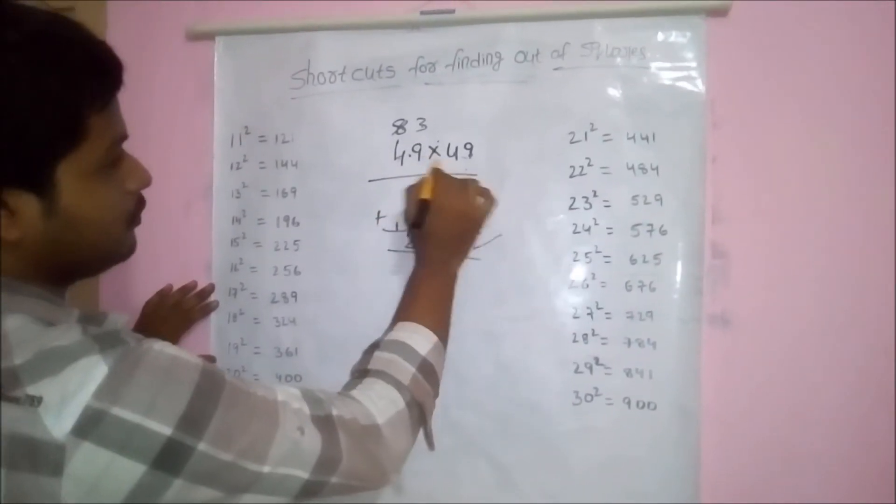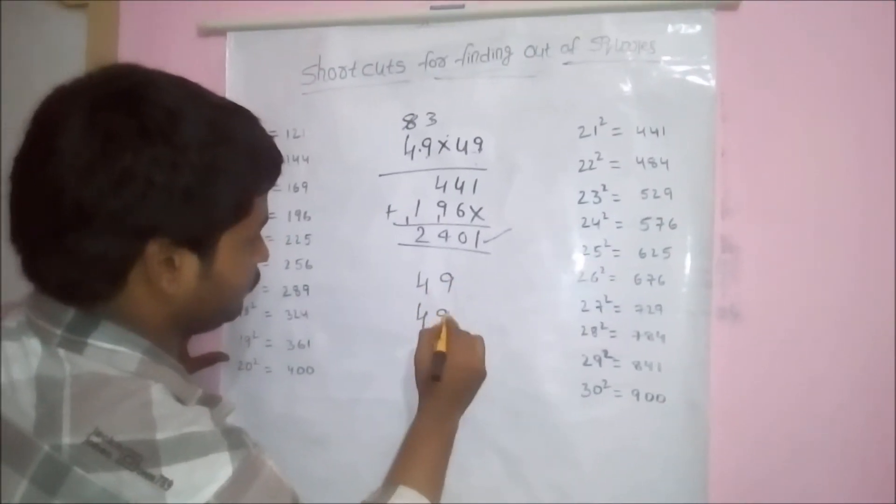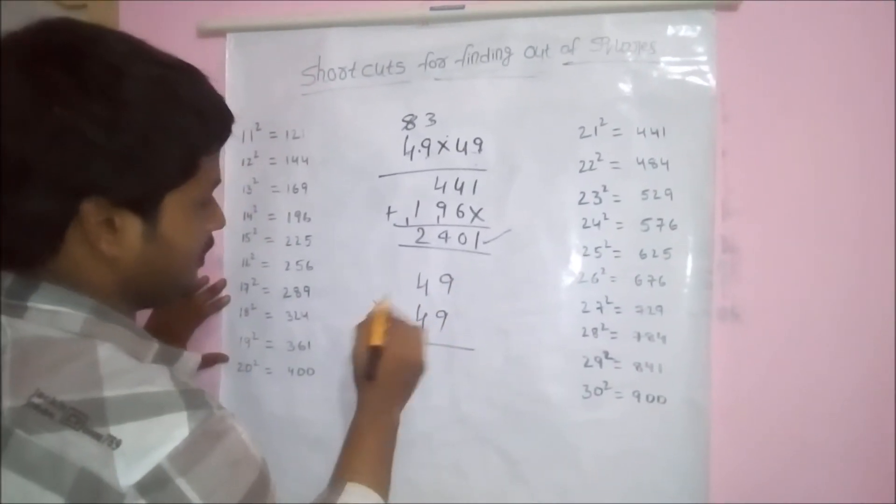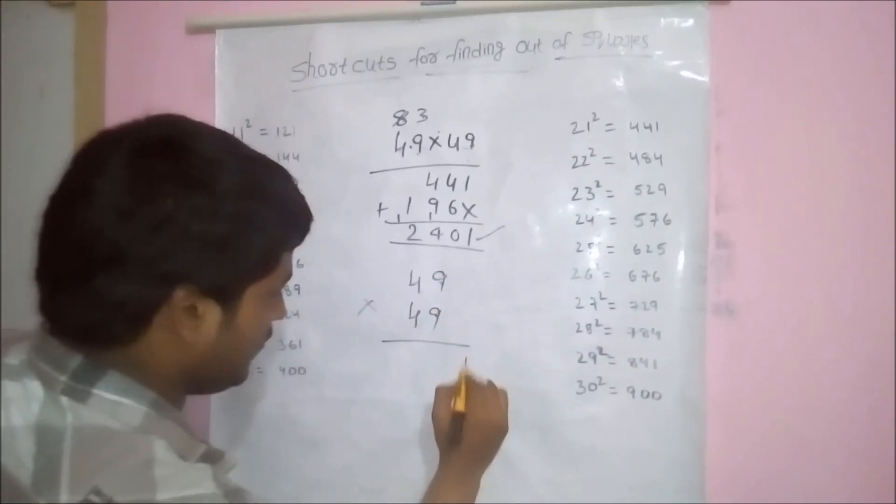For finding out a shortcut for 49 into 49, it's a simple method. Here, take the unit digits and square them. 9 nines are 81.